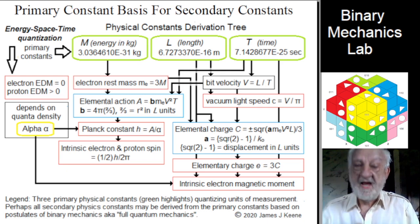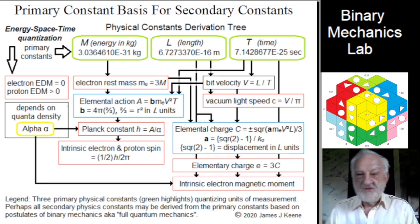This is consistent with the measured values for, as shown in the red boxes to the left, electron rest mass, vacuum light speed C, Planck's constant H, elementary charge E, and intrinsic electron magnetic moment.